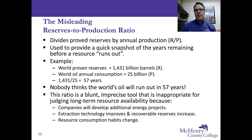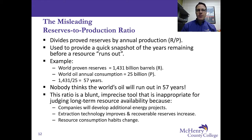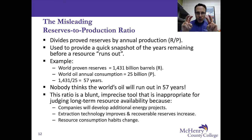Finally, we come to the misleading reserves-to-production ratio. This ratio is a tool that simply divides the world's proved reserves by the world's annual production. It can also be applied to countries or states, but typically it's applied to the world, and it's used to provide a quick snapshot of the number of years remaining before a resource runs out.